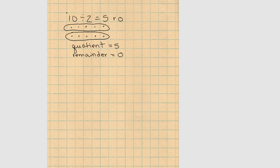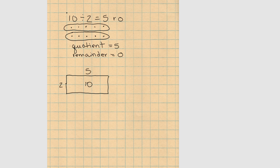Let's also show the same problem with an area model. We're going to draw a rectangle. One side is going to be 2 long since we're dividing by 2, and we're going to count by 2's until we have 10 squares inside the rectangle: 2, 4, 6, 8, 10. So 10 squares inside our rectangle — that's our area. 2 times 5 is 10. For division, we show our total in the area part of the rectangle. Divided by 2 equals 5.